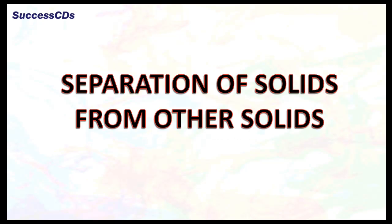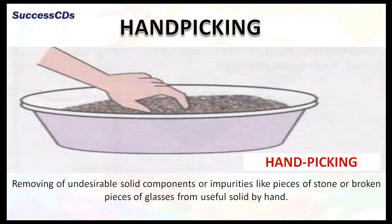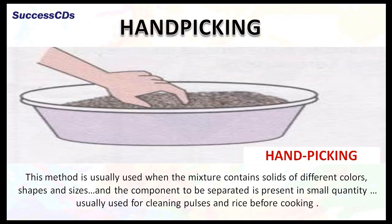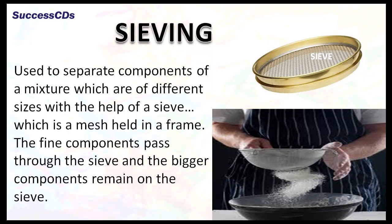Let's talk about some separation methods. When the components of a mixture are solids, handpicking is the removing of undesirable solid components or impurities — like pieces of stone or broken pieces of glass — from useful solids by hand. This method is usually used when the mixture contains solids of different colors, shapes, and sizes, and the component to be separated is present in small quantity. It is usually used for cleaning pulses and rice before cooking.